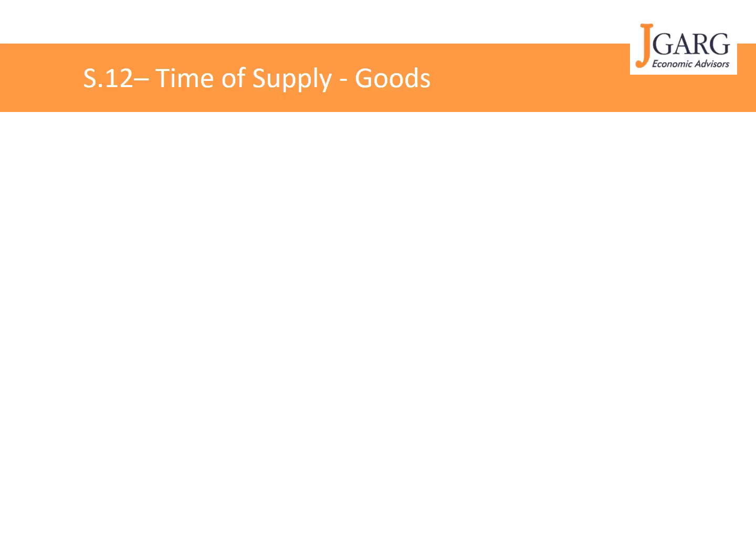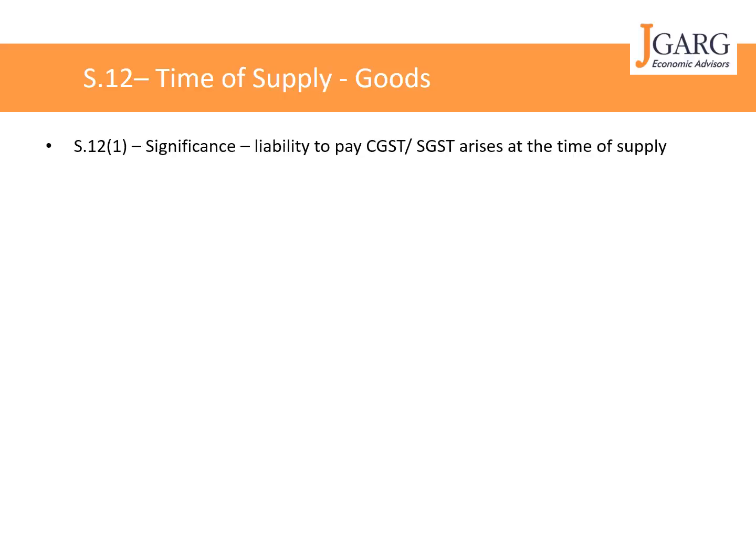We will also upload a presentation on time of supply of services relating to Section 13 soon. Subsection 1 establishes the significance — it talks about the liability to pay CGST or SGST, which arises at the time of supply. If you are not sure about time of supply, you may not know when this liability is arising. In this presentation we discuss time of supply for goods, dividing it into various cases or circumstances.